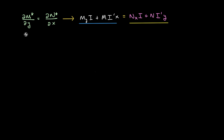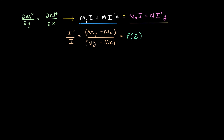In order for the new differential equation involving the integrating factor to be exact, these two partial derivatives must be equal. So M sub y times i plus M i′ times x must equal N sub x times i plus N times i′ times y. Rearranging this equation, we find that i′/i equals (∂M/∂y − ∂N/∂x) divided by (Ny − Mx). We call this function p of z.